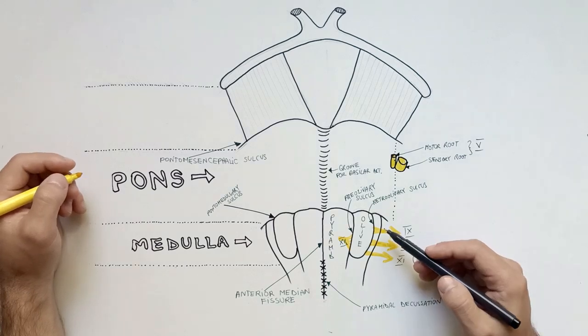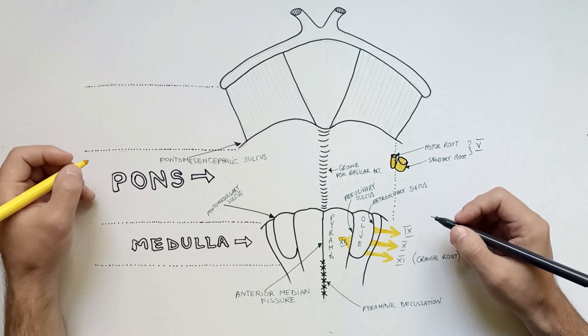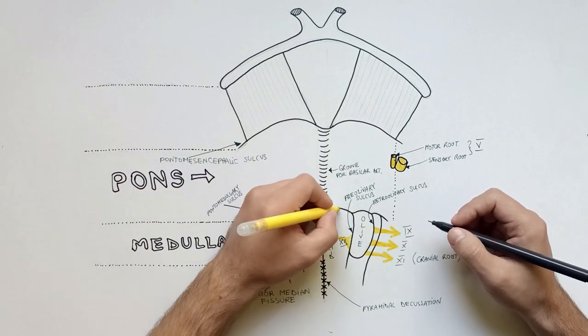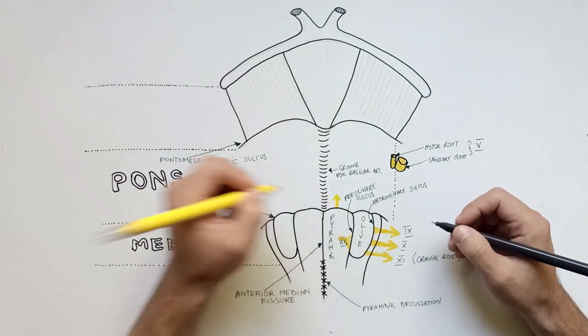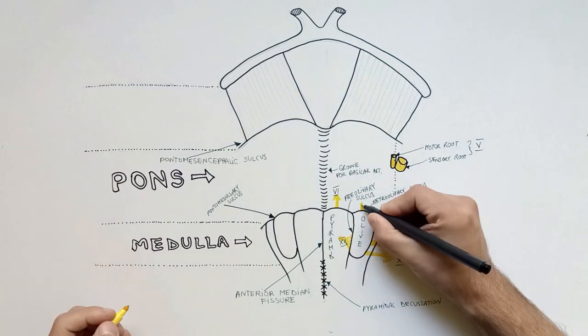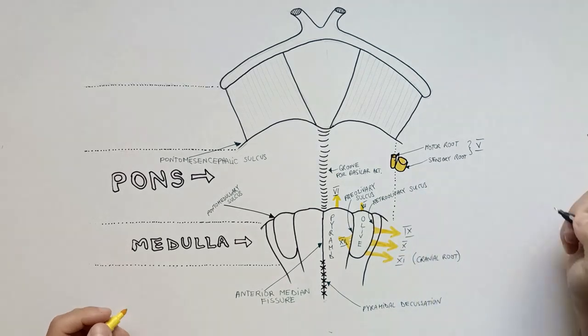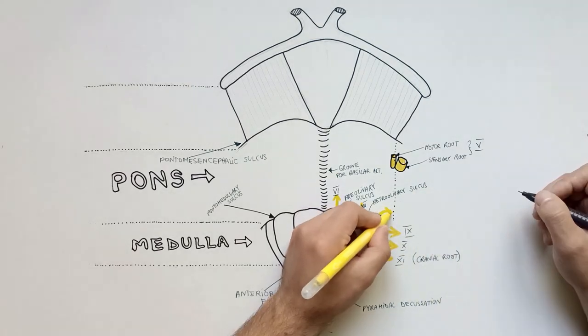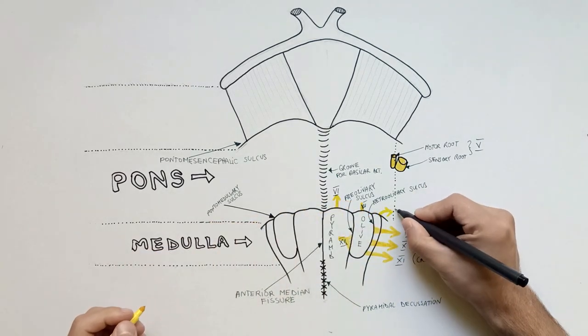Between pons and medulla at the level of pontomedullary sulcus emerge three cranial nerves. From medial to lateral we have the abducens nerve or the sixth cranial nerve, the facial or seventh cranial nerve, and the vestibulocochlear or eighth cranial nerve.